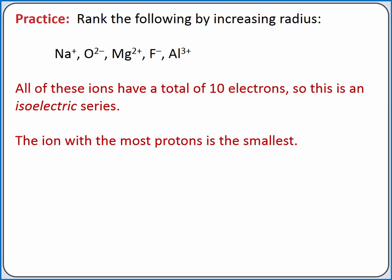If we arrange these ions in order of increasing size, the smallest will be aluminum 3+, because it has the most protons, and the largest will be oxygen 2- because it has the fewest protons.